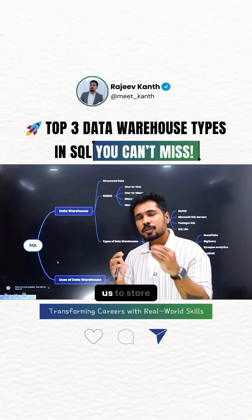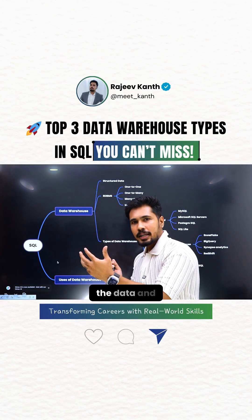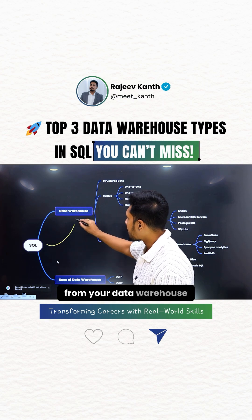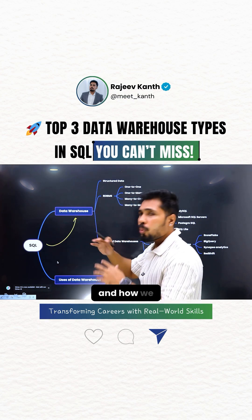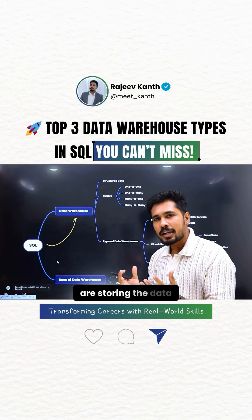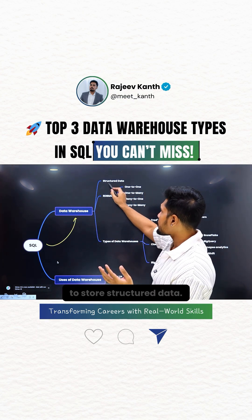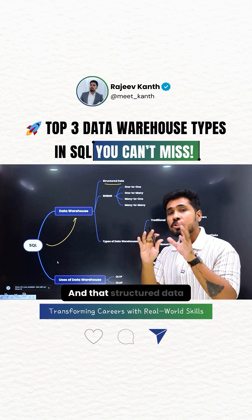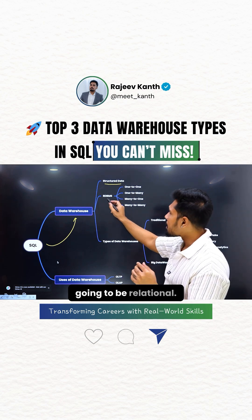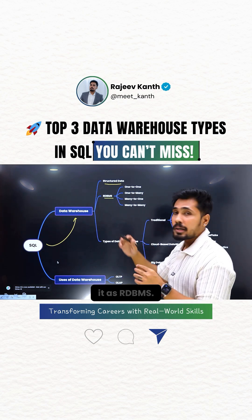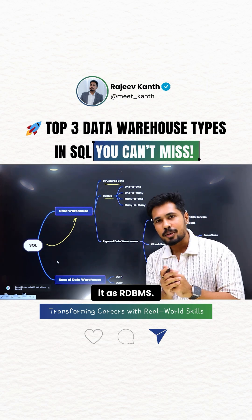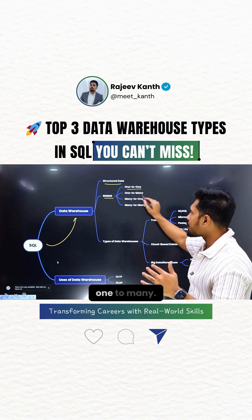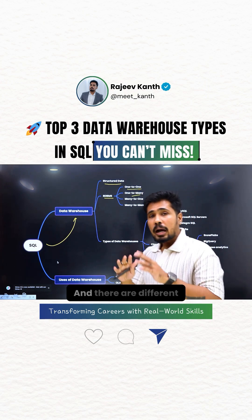SQL is going to help us to store and collect data from your data warehouse. When storing data inside data warehouses, we store structured data, and that structured data is going to be relational — so we call it RDBMS. There are types of relations like one-to-one, one-to-many, and you can see these four types.